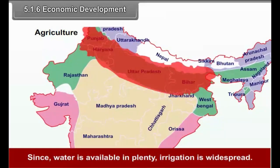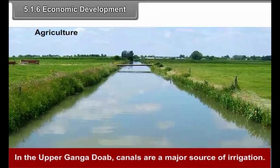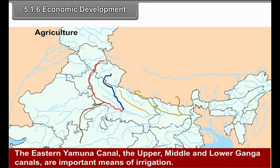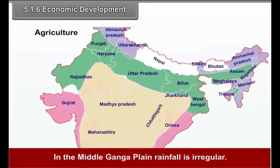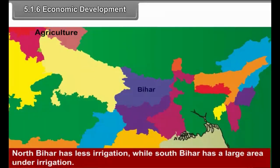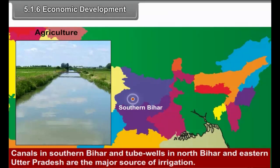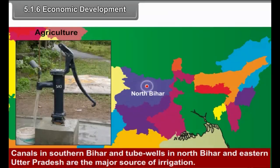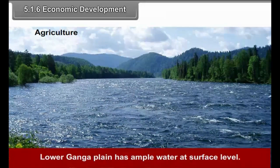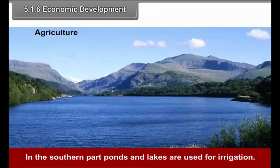Since water is available in plenty, irrigation is widespread. In the upper Ganga Doab, canals are a major source of irrigation. The eastern Yamuna canals, the upper, middle and lower Ganga canals are important means of irrigation. Tube wells are also important. In the middle Ganga Plain, rainfall is irregular. North Bihar has less irrigation while South Bihar has a large area under irrigation. Canals in southern Bihar and tube wells in north Bihar and eastern Uttar Pradesh are major sources of irrigation. The lower Ganga Plain has ample water at surface level. In the southern part, ponds and lakes are used for irrigation.